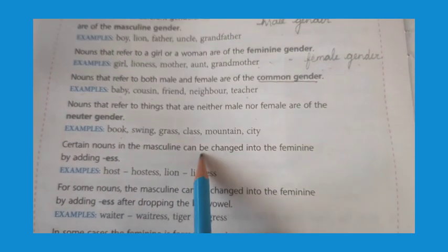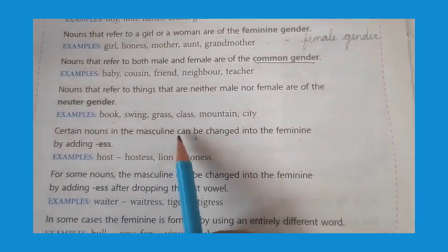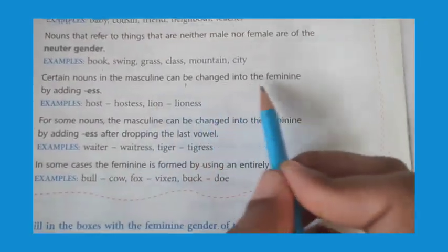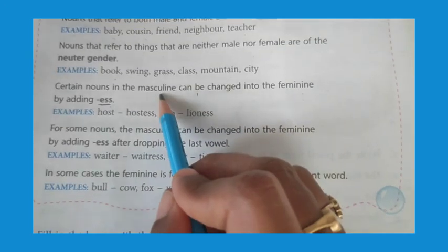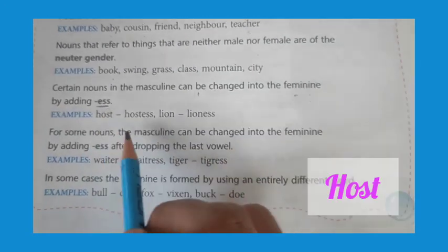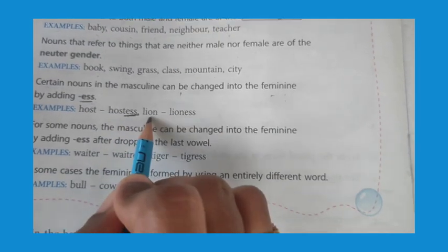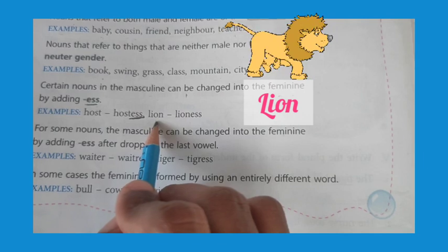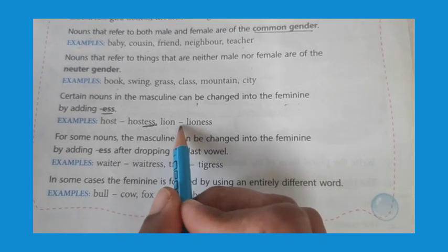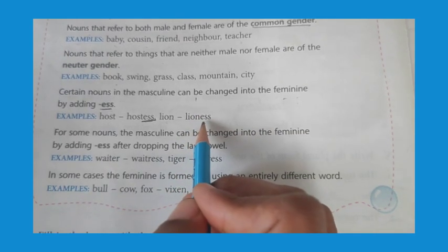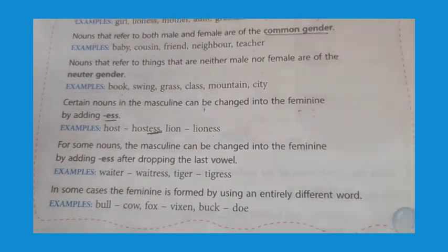Certain nouns in the masculine can be changed into the feminine by adding -ess. That means there are some male gender words we have to change by adding -ess to make them feminine. For example, host becomes hostess — they have added -ess. Lion is male and lioness is female. Tiger is male, tigress is female. We have to add -ess for some genders to change male into female.